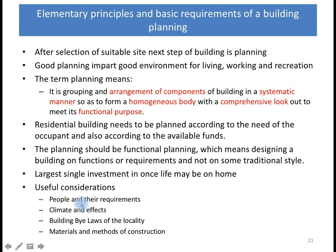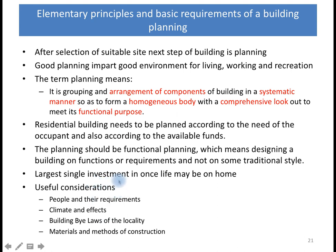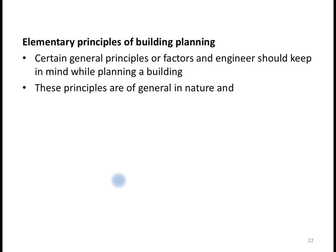That depends on the people and needs to be taken into consideration. The second point is the climate of that region — whether it is a hot, cold, or rainy environment. Based on that, the planning and arrangement of different building components like windows, doors, openings, entrance, front side, dining room, bedroom, and kitchen need to be arranged. Building bylaws of that particular region should also be taken into consideration.